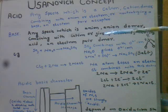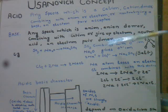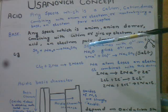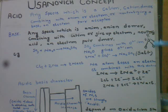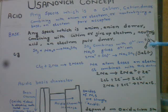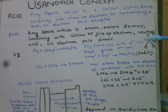SO2 mein ya SO3 mein ya CO2 mein jo carbon/sulfur atom hota hai, woh connected hota hai oxygen ke saath. Oxygen highly electronegative hone ki wajah se yeh electrons ko apni taraf kheench leta hai, jiski wajah se yeh central atom electron deficient ho jata hai. Apni electron deficiency ko poora karne ke liye yeh oxygen se ya kisi aur hydroxide se electron pair accept karta hai.